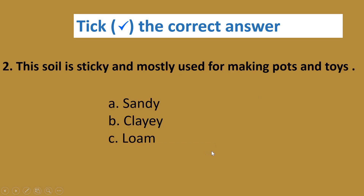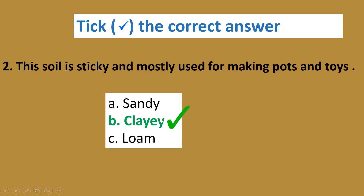Second: this soil is sticky and mostly used for making pots and toilets. The three options are sandy, clay, and loam. The correct answer is clay. It is sticky and mostly used for making pots and toys.